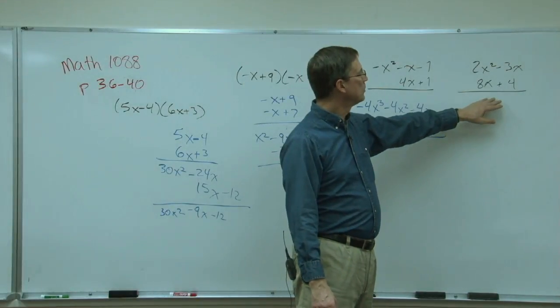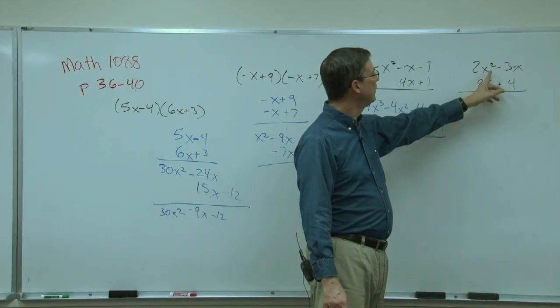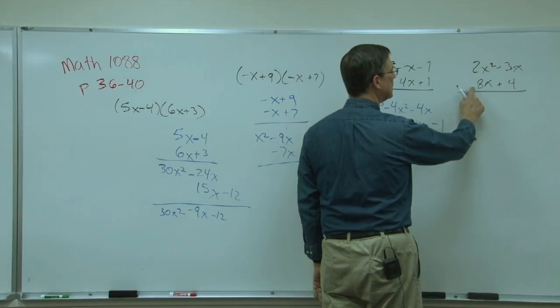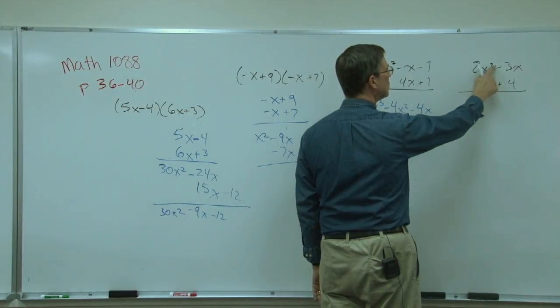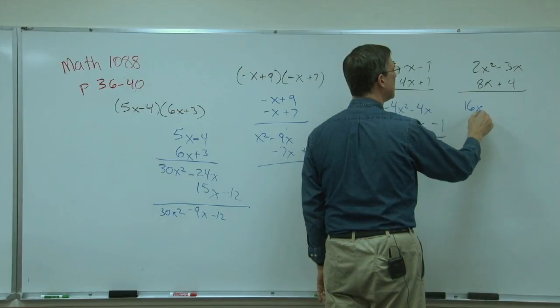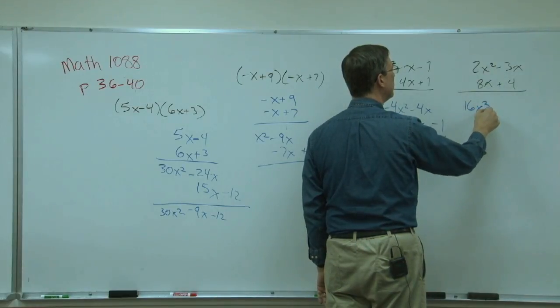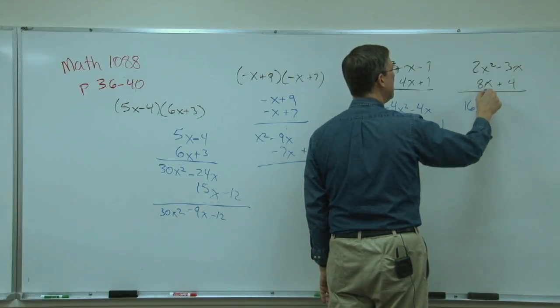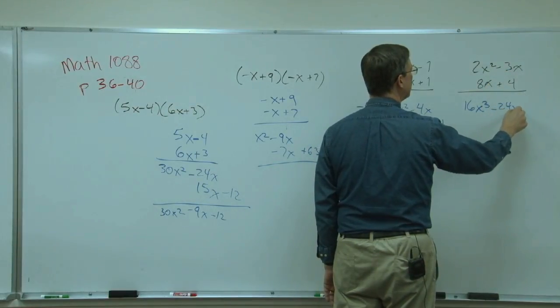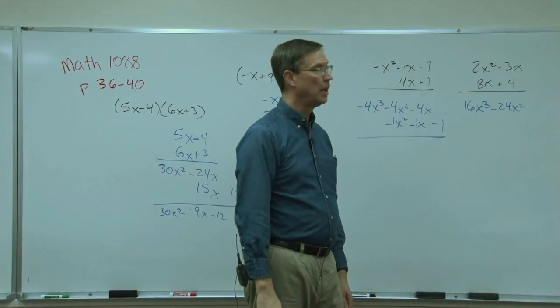One more. Let's do this one together because it's a little different. We have a squared term and an x. We're going to multiply times 8x. So 8x times 2x squared. 8 times 2 is 16. 14x to the 3rd. Take the 8x times the negative 3x. Negative 24x squared.